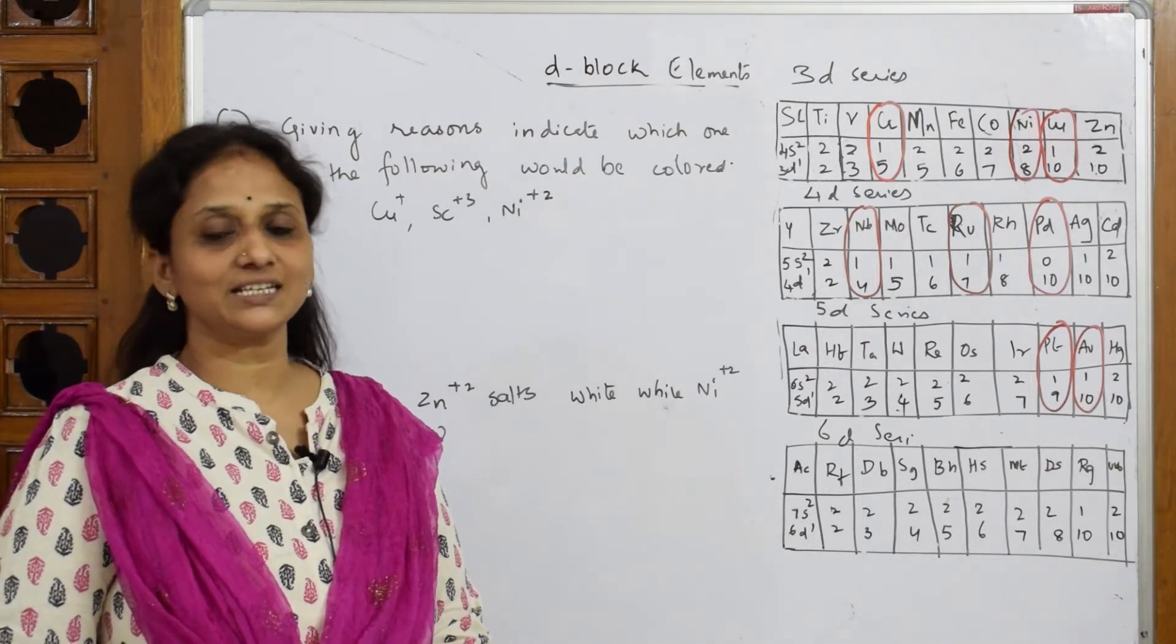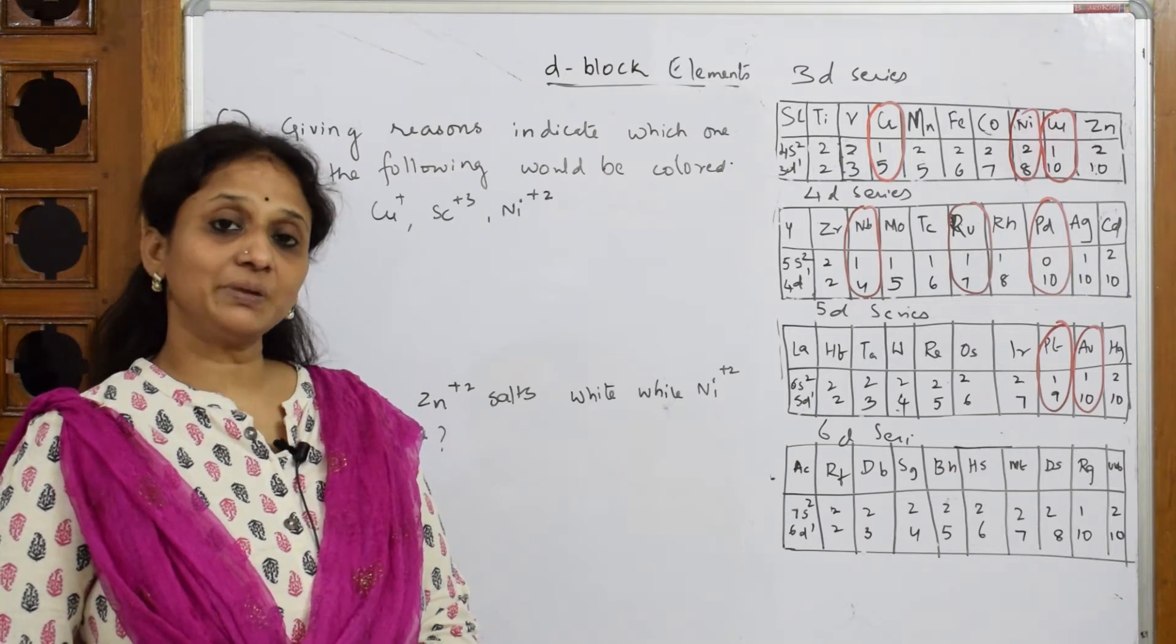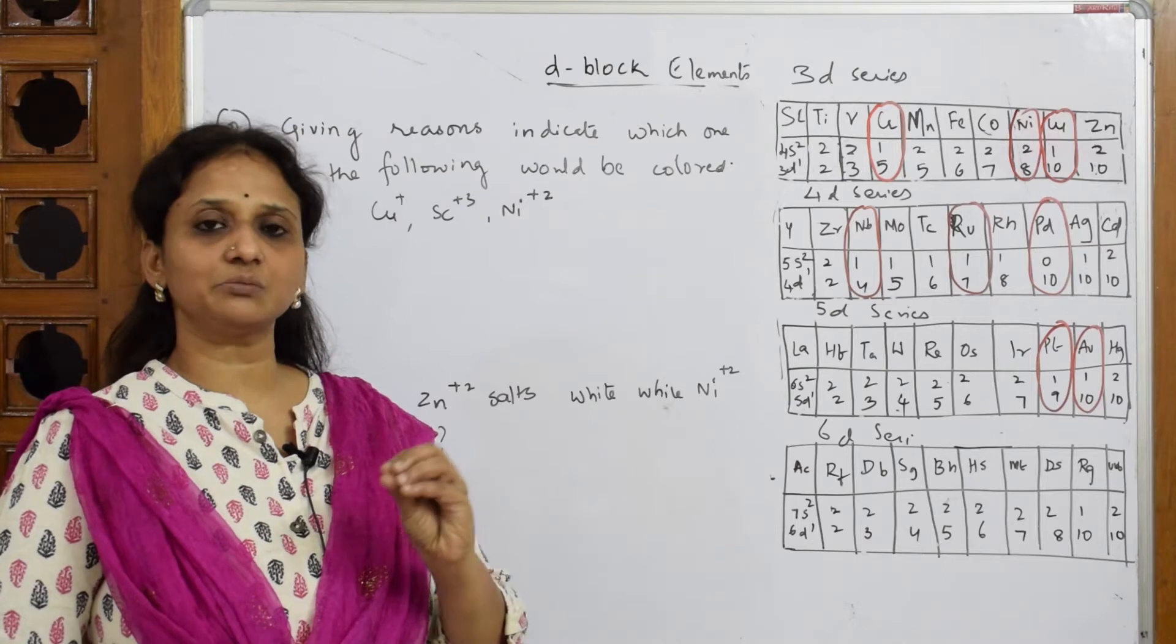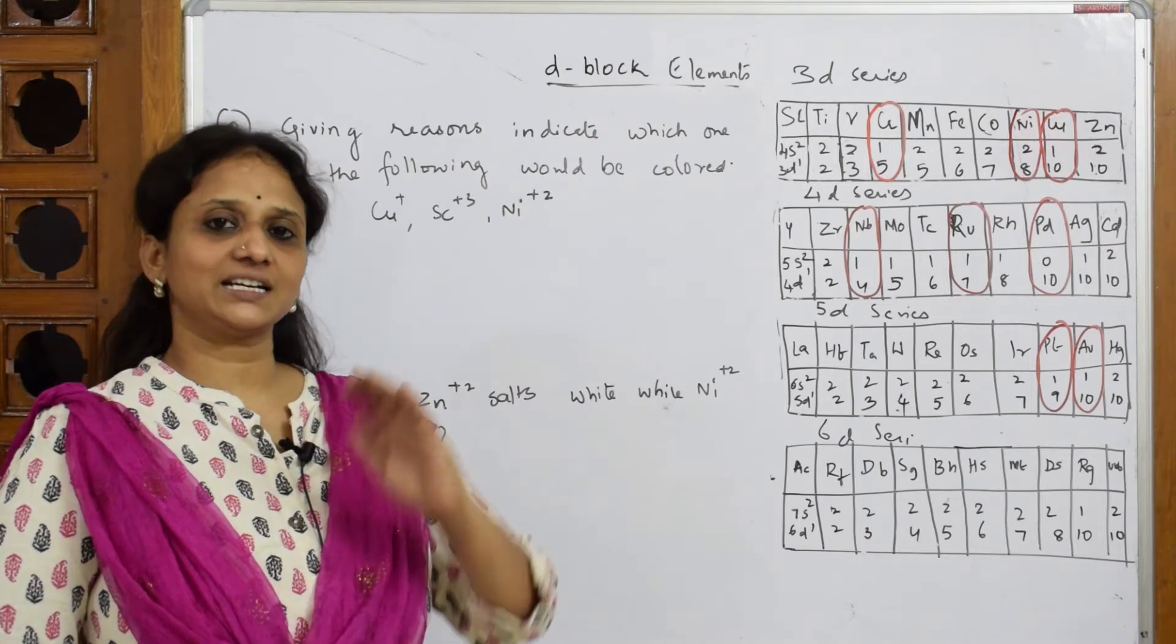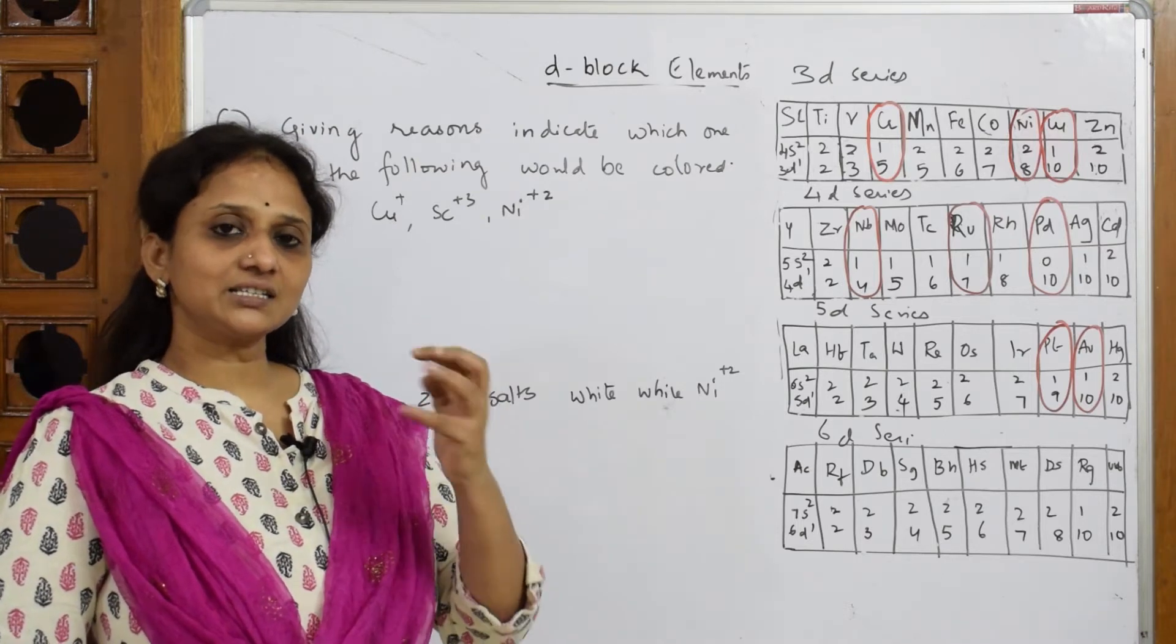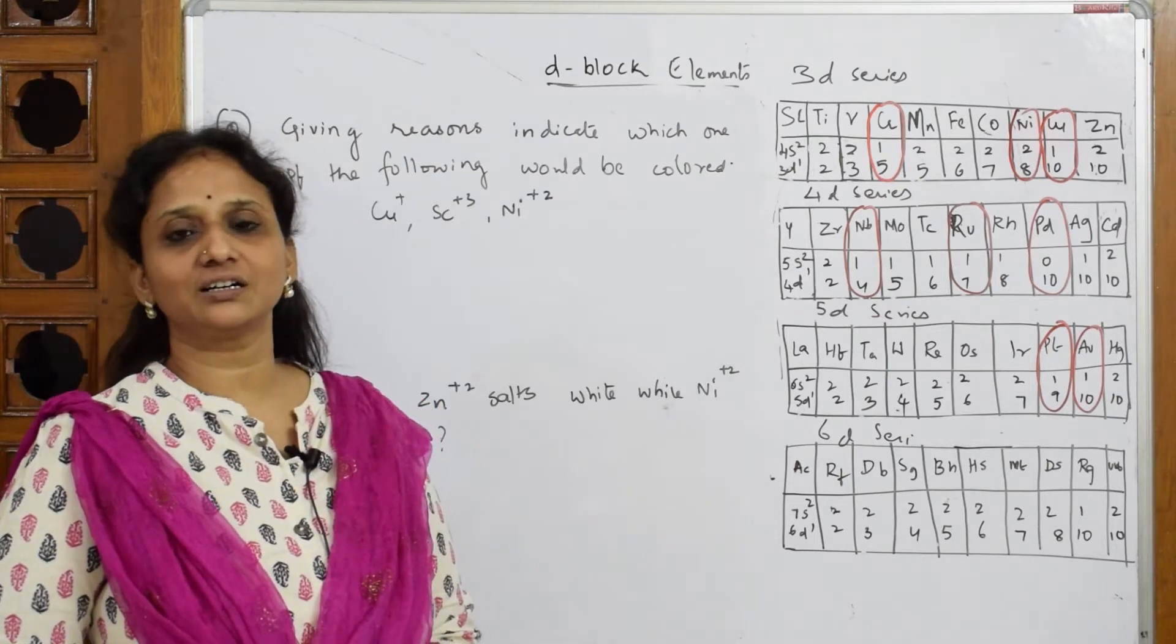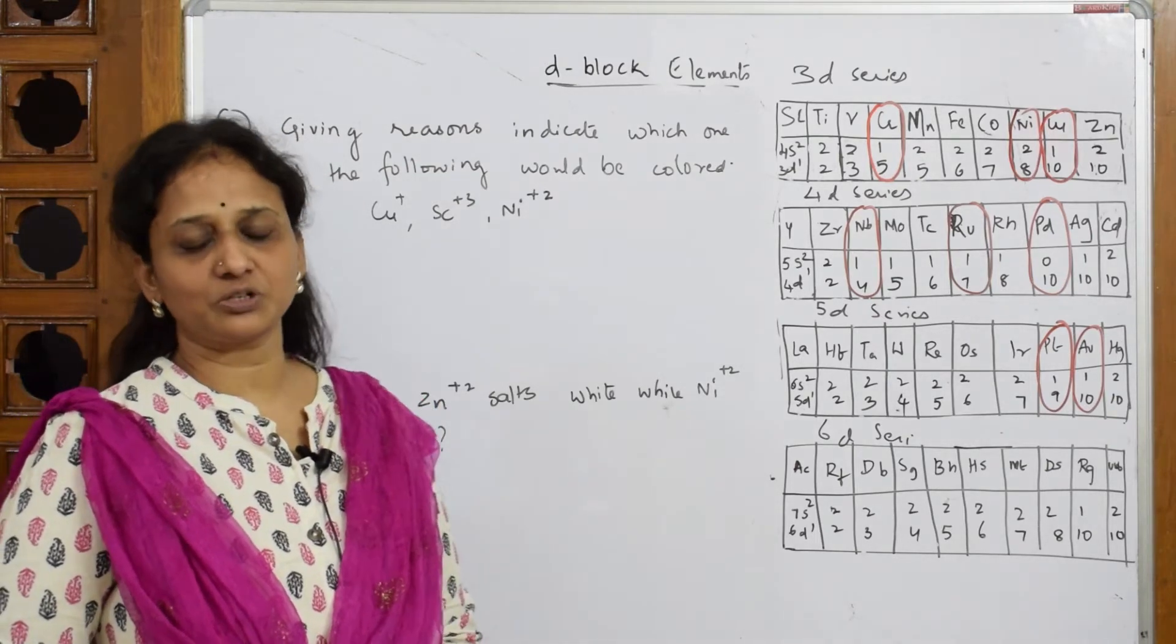The only important thing is there should be an unpaired electron present in that particular element, then only I can say it is colored. Why unpaired electron? When there is an unpaired electron, that electron absorbs certain amount of photons, it will go to the excited state. During excited state it's going to absorb that particular frequency of the color and finally drop down to the ground state.